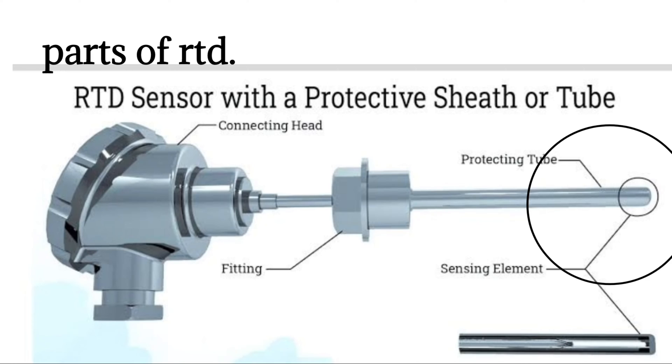Lead wires are attached to the sensing element and then pass through the sensor sheath. Lead wires connect the sensing element either directly to the DCS or to a temperature transmitter connected to a DCS.